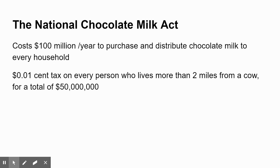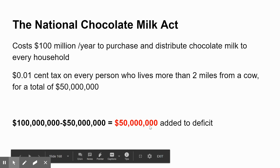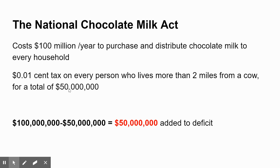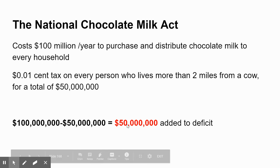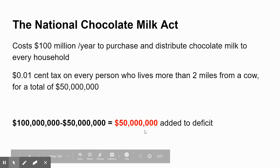If they found that that tax is great but it only raises $50 million, while this law will cost $100 million, that's going to create a $50 million deficit. That's the difference between the $100 million spent and the $50 million raised — so that's a $50 million deficit.